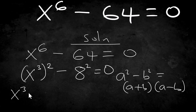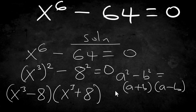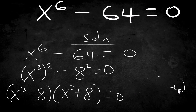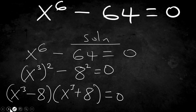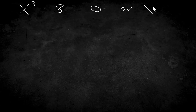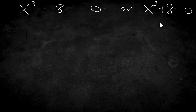So we have (x³ minus 8)(x³ plus 8) equals zero. Setting each factor to zero: x³ minus 8 equals zero, or x³ plus 8 equals zero. The first one will give us three solutions and the second one will give three more solutions, making six in total.